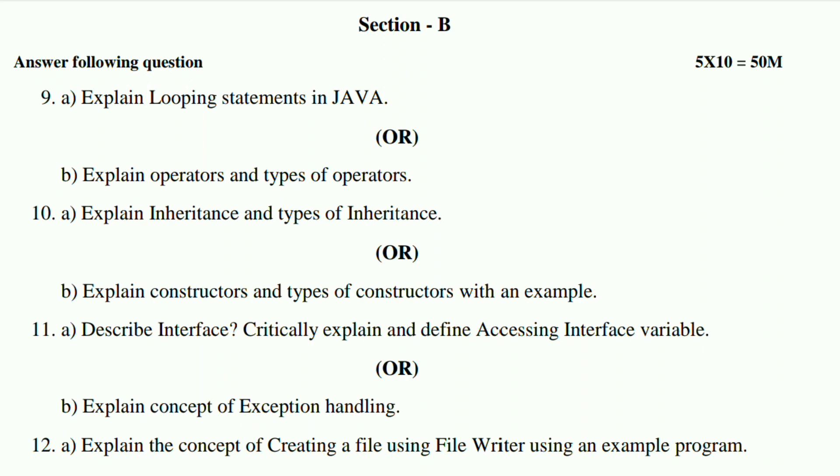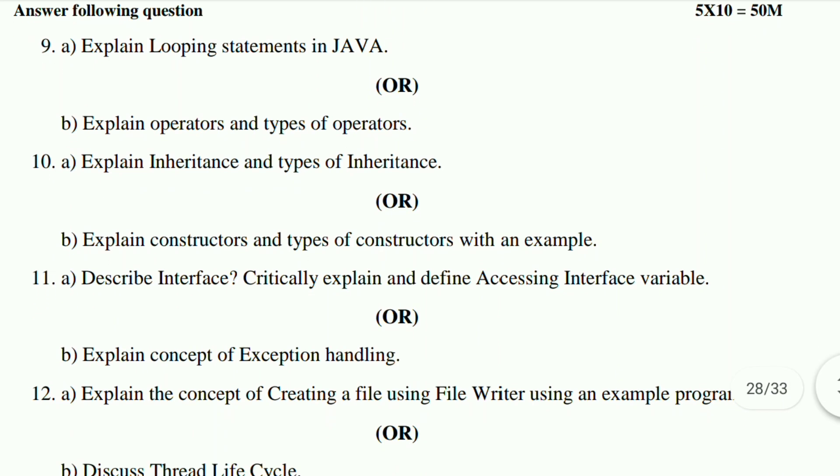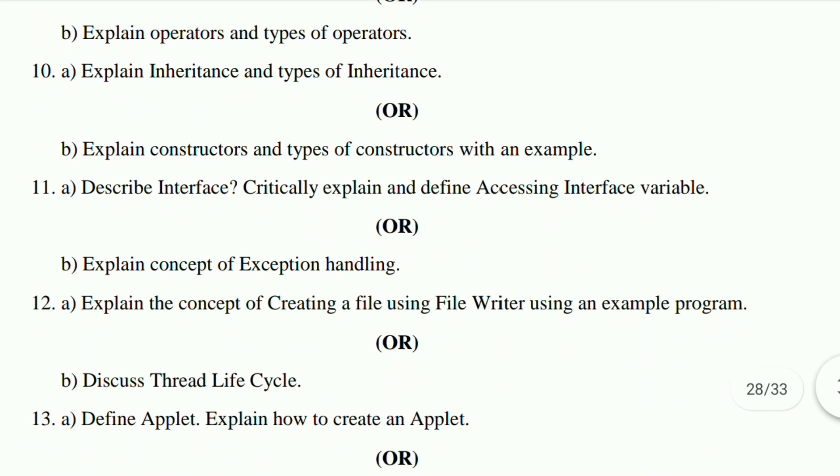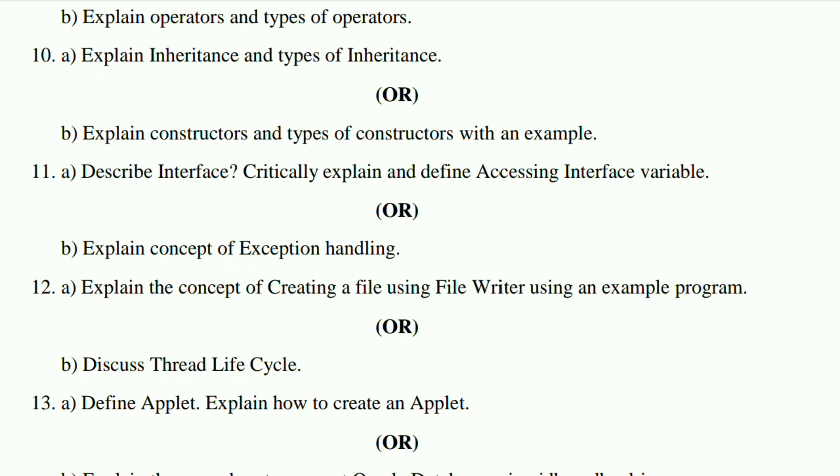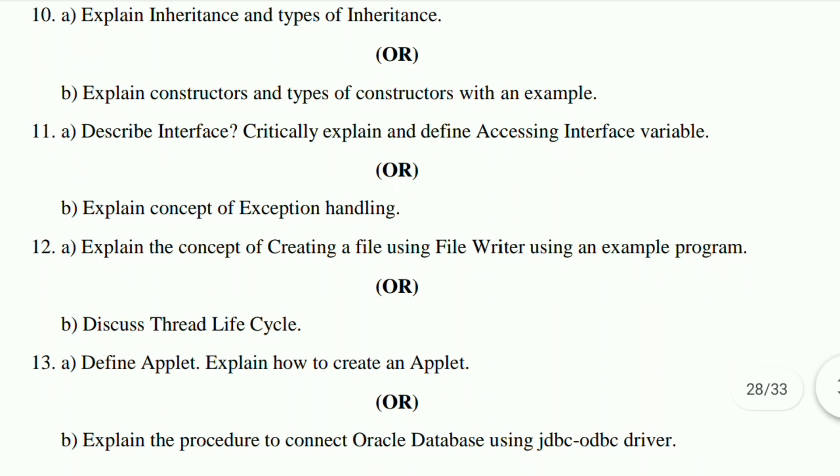Eleventh A: describe interface, critically explain and define accessing interface variable. Eleventh B: explain concept of exception handling. Twelfth A: explain the concept of creating a file using File Writer using an example program. Twelfth B: discuss thread life cycle. Thirteenth A: define applet, explain how to create applet. Thirteenth B: explain the procedure to connect Oracle database using JDBC-ODBC driver. Next video: operating system model question paper.